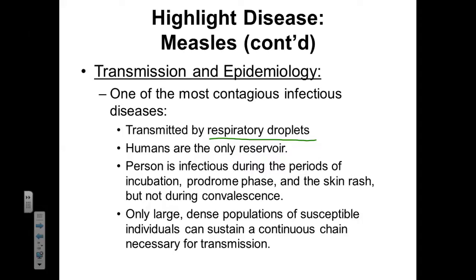If a person is infected with the measles virus, they are generally going to be infectious during the incubation period, the prodromal phase, and the skin rash phase — so they're infectious before they develop symptoms, while starting to develop symptoms, and while they have full-fledged symptoms. Once they start to get better and enter the convalescing phase, they are no longer infectious. Measles can only survive in areas with large, dense populations of susceptible individuals, because it needs a continuous supply of human beings to keep the virus alive.